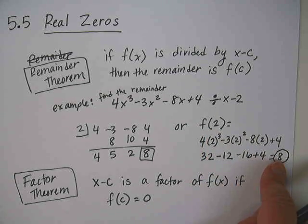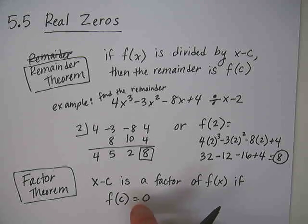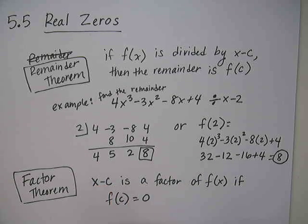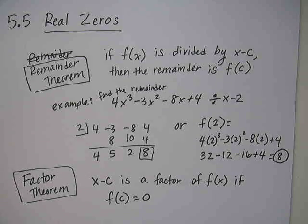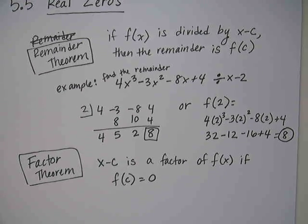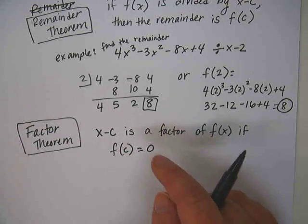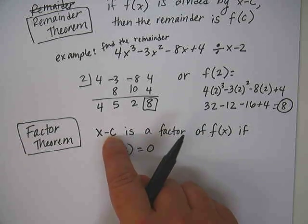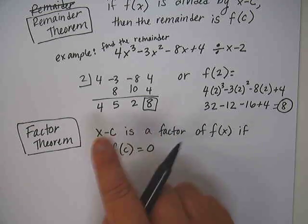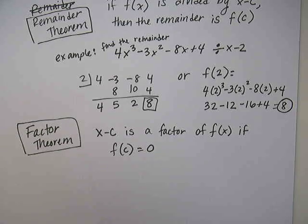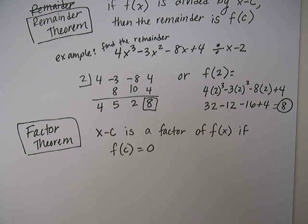That means that that answer is an x-intercept, or not the answer, the answer is 0, but the number you're plugging in is an x-intercept because that's where the y value is 0. So this is something we have already been using, that if c is an x-intercept, then x minus c is a factor. I'm going to go ahead and skip doing an example on that one because it's just a matter of the factor theorem and the fact that c is an x-intercept go hand in hand.